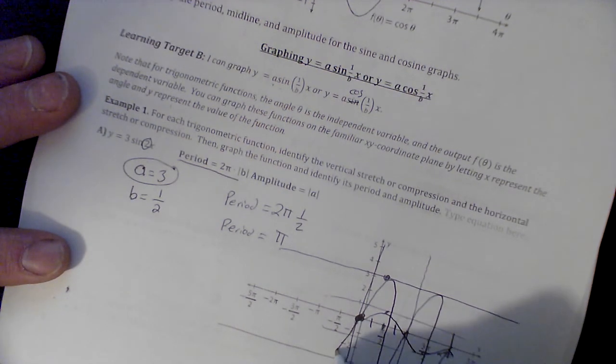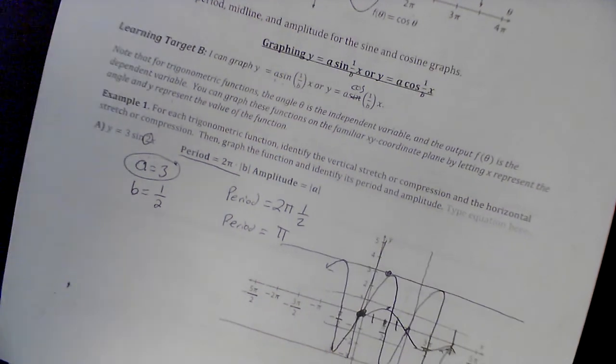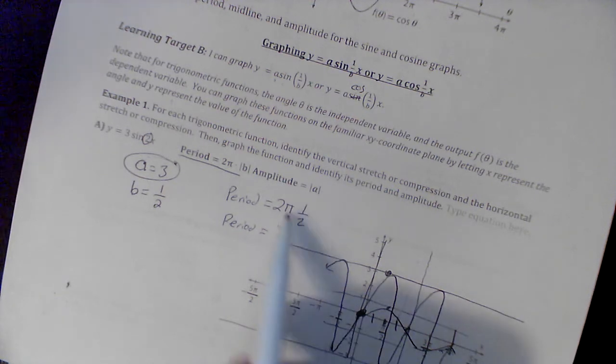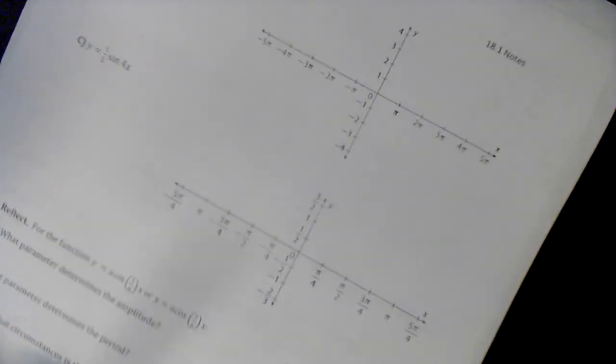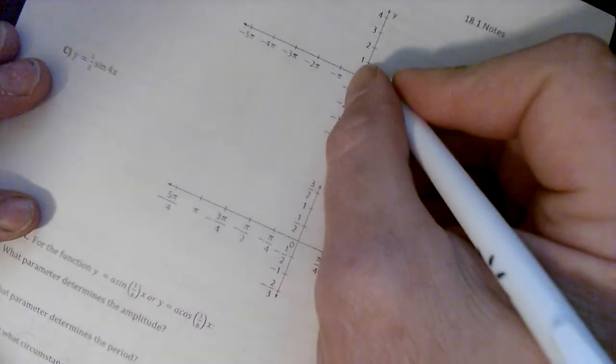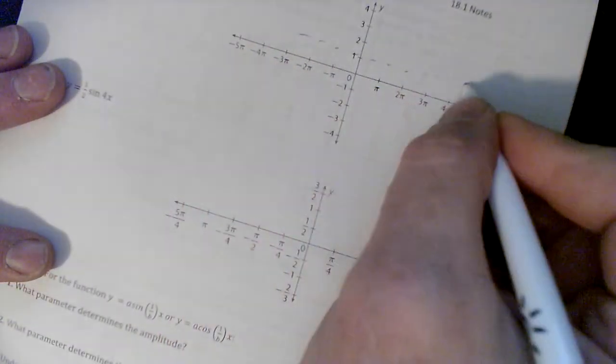I'm just going to go to there, and it would continue in this direction as well, forever. That is a sine graph with a horizontal compression and a vertical stretch. This guy right here has cosine, so let's start off with the standard cosine graph.